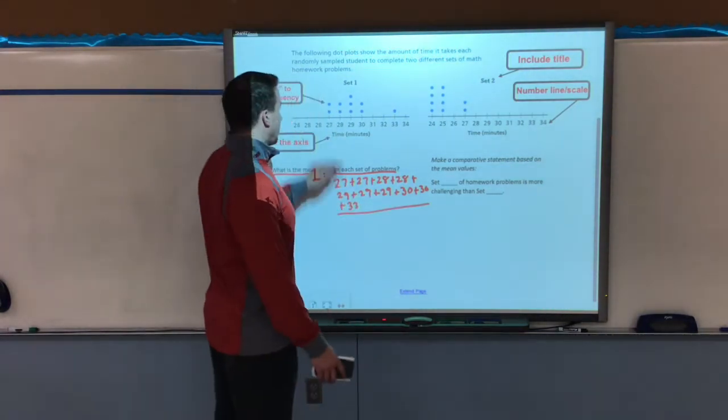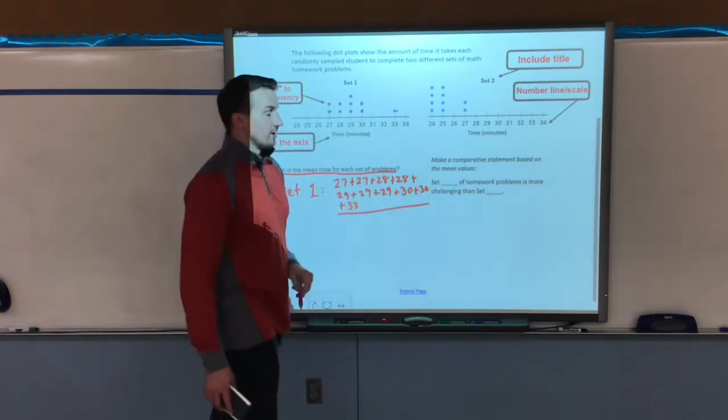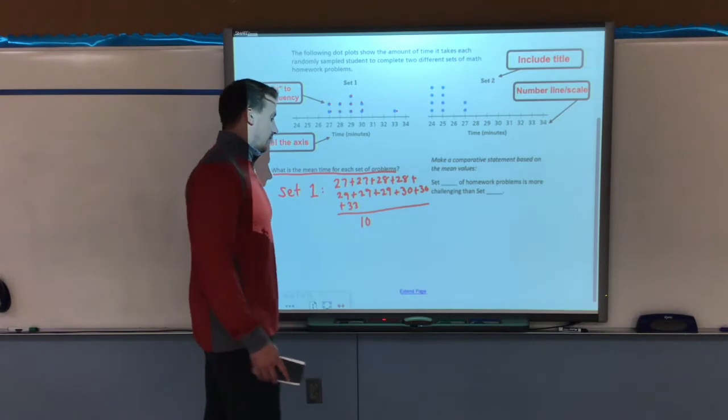Then I'm going to divide that by how many there are? One, two, three, four, five, six, seven, eight, nine, 10. That would be 10. So divide all of them by 10.